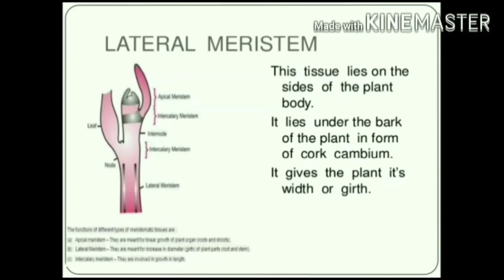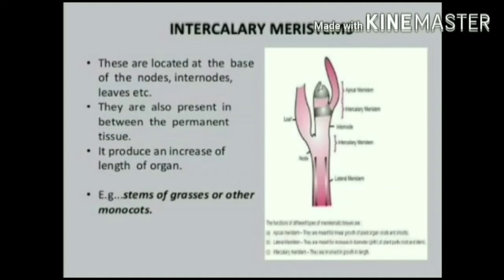The next type is lateral meristem, which lies on the sides of the plant body. It lies under the bark of the plant in the form of cork cambium. It gives the plant its width or girth. Next is intercalary meristem, which is located at the base of the nodes, in leaves, etc. It is also present between the permanent tissues.